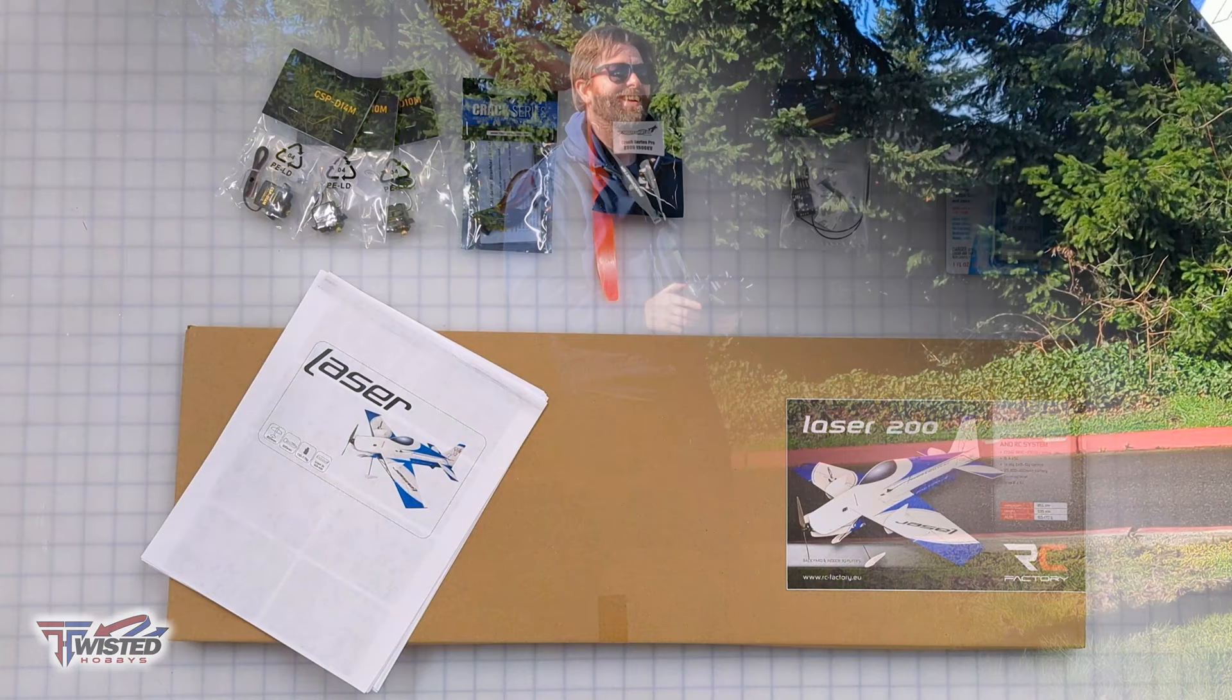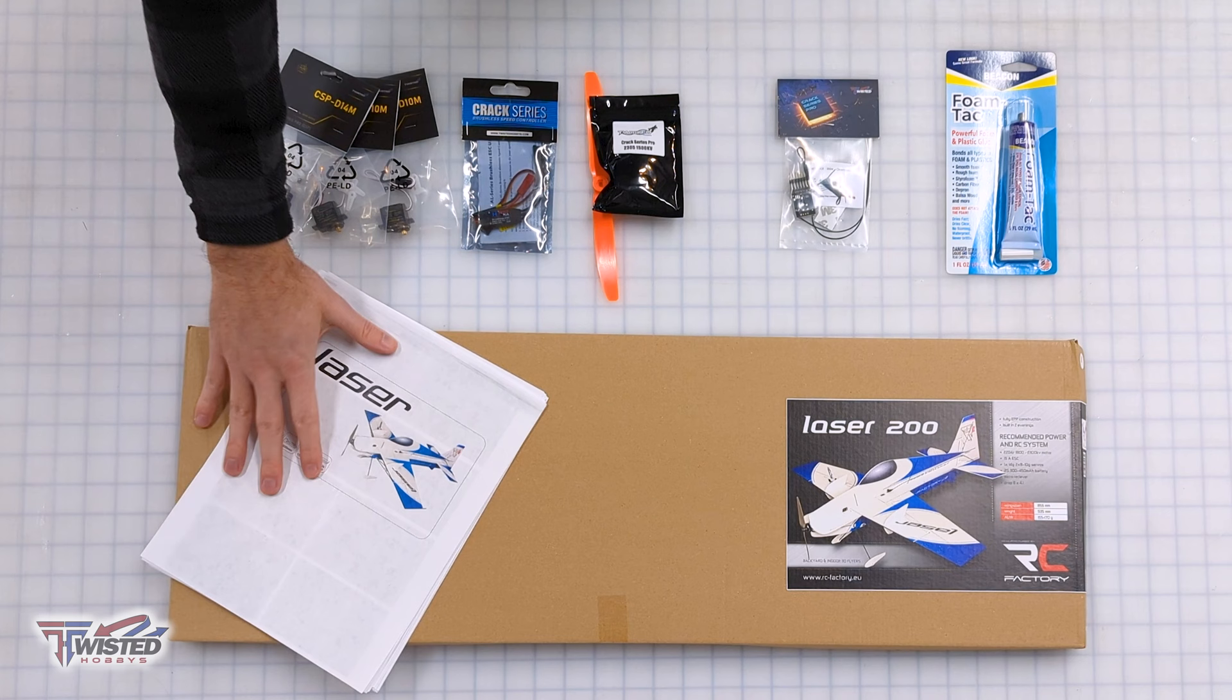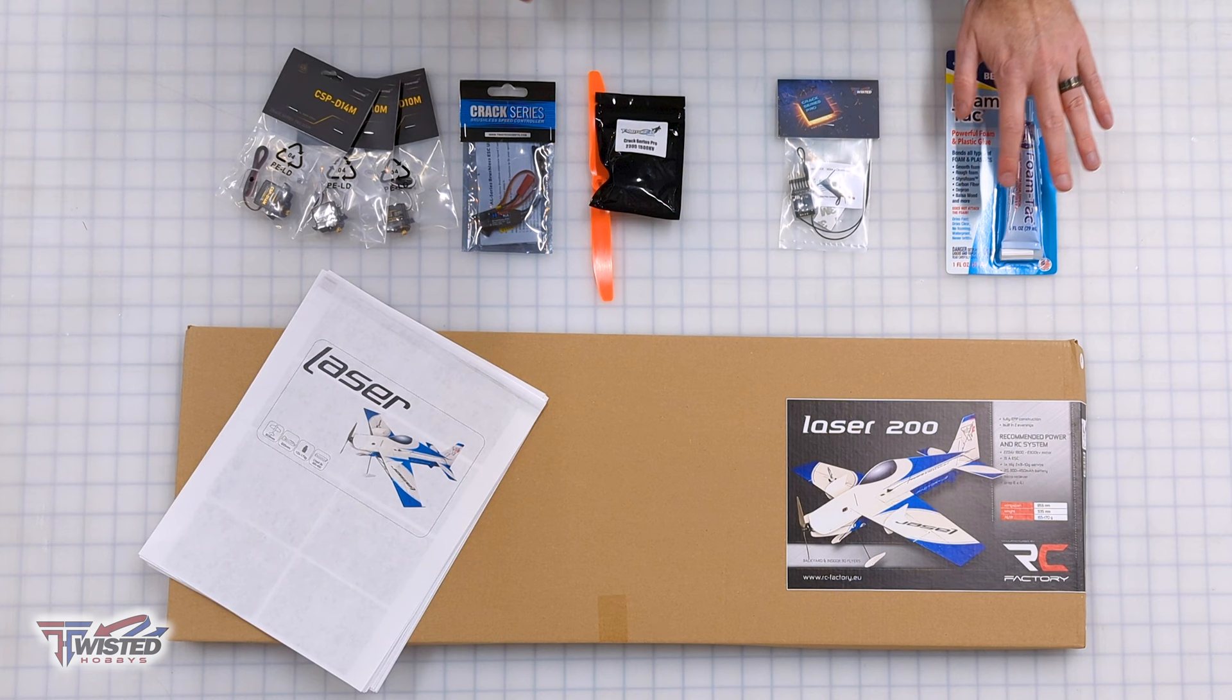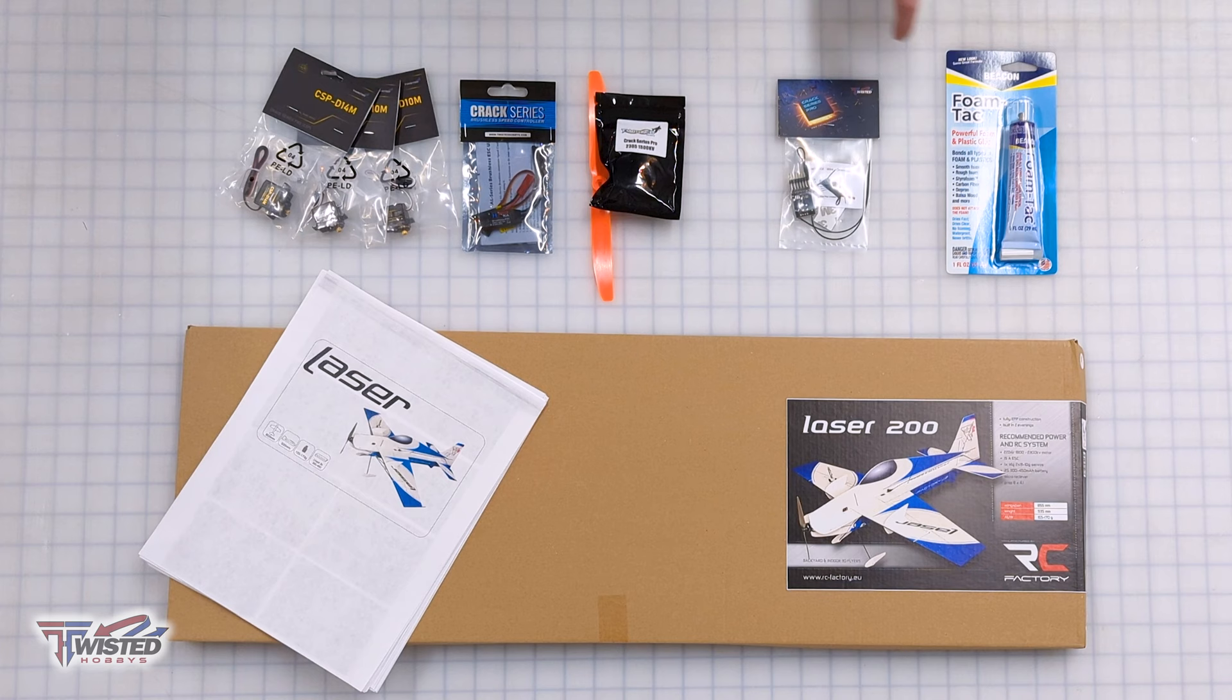This is Jim with Twisted Hobbies and today we're building the Laser 200. We have the plane itself with all the parts, the manual that I downloaded and printed off from online with a link on the product page. We have the power combo, the receiver, and my favorite adhesive which is foam tack. You can use lots of adhesives but foam tack is my favorite.